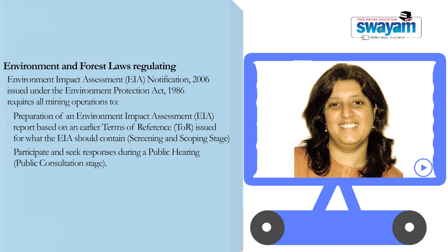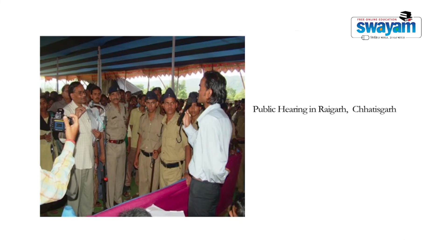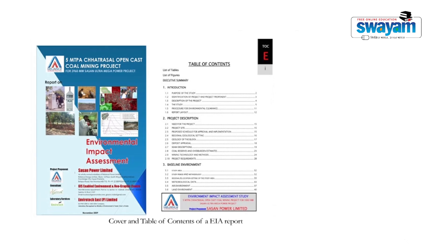Following the public hearing and the finalization of the Environment Impact Assessment Report based on feedback received, an appraisal is carried out by the Mining Related Expert Committee. At the Ministry of Environment and Forests, for Category A projects, there are separate appraisal agencies for both coal mining projects and other mining projects. So if you are a coal mining project, you will be appraised by the Coal Mining Expert Committee; if you are any other mining like bauxite or iron ore, you will go to the specific committee on mining. This slide shows images of public hearings and a sample EIA Report table of contents illustrating the kinds of issues covered in this document.